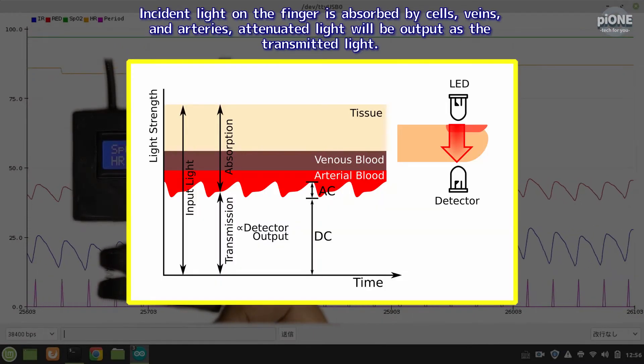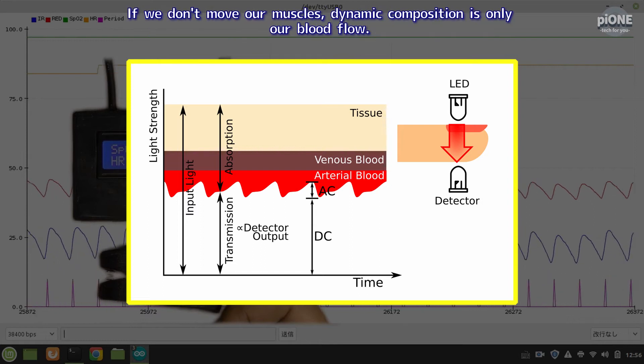Incident light on the finger is absorbed by cells, veins, and arteries. Attenuated light will be output as the transmitted light. If we don't move our muscle, dynamic composition is only our blood flow.